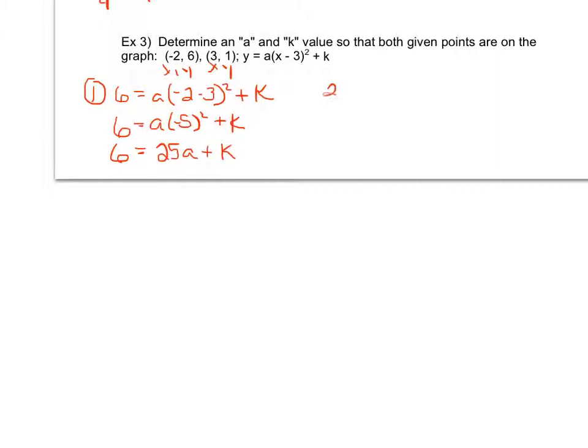My second equation, doing the same thing but now using my second point, I get 1 equals a times 3 minus 3 squared plus k. This simplifies to be 1 equals a times 0 squared plus k. Well, in this particular situation, I get fairly lucky in the aspect that that's going to drop to be 0. So it's already going to tell me what k is.